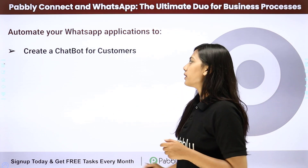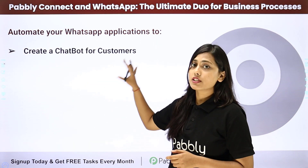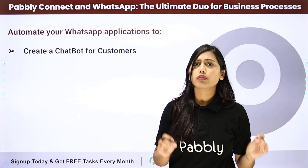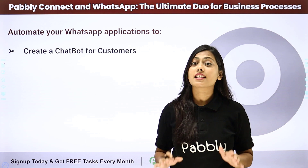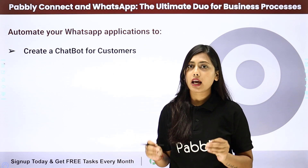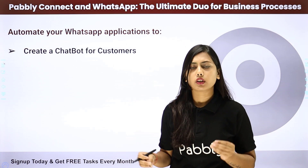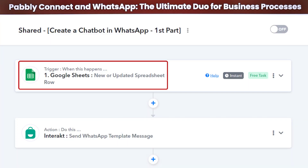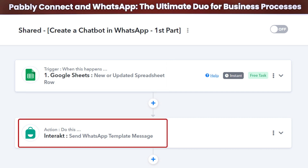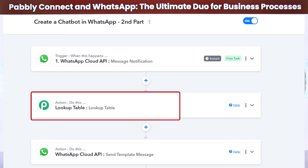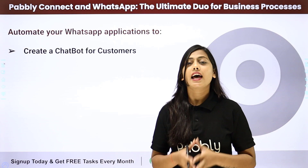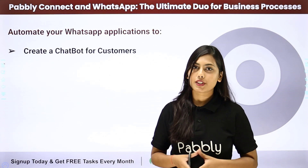Next, you can create a chatbot for customers. Since you cannot be available every time to solve customer queries, the best thing you can do is create a WhatsApp chatbot that generates replies according to the user's responses. You integrate Google Sheets, send messages via Interact, and then based on the replies of the user you create a lookup table for different types of customer replies — and that is how the conversation will proceed.